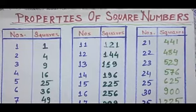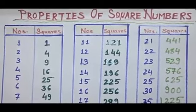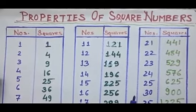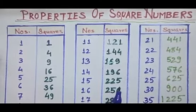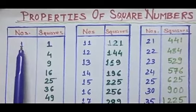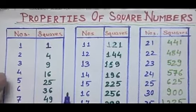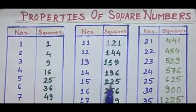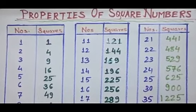These square numbers follow some specific properties. Let us understand these properties of square numbers using this chart. This chart is showing the square of some whole numbers, starting from 1. You can see, square of 1 is 1, square of 2 is 4, square of 3 is 9, and all other numbers are given in this chart.